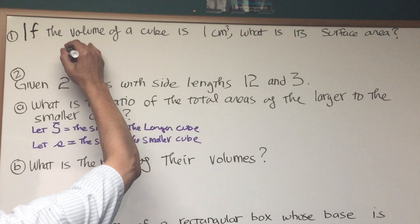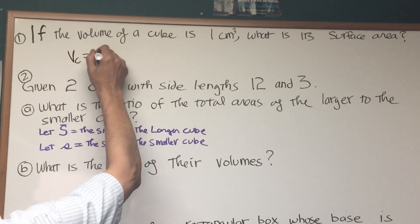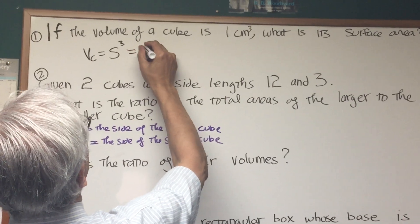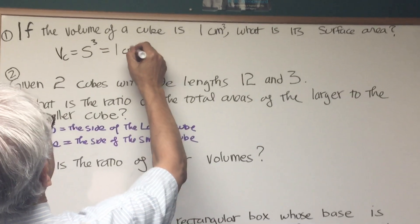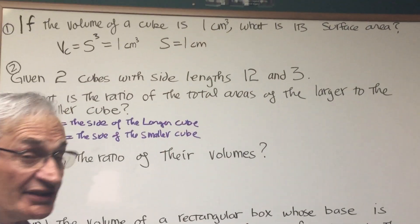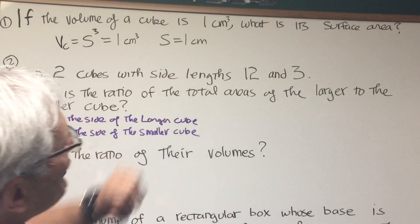Well, the volume of a cube is simply one side cubed. Okay, so there we go. And we know this one side cubed is equal to one centimeter cubed, so we know the side is equal to one centimeter. Very simple. Now, what is the surface area?